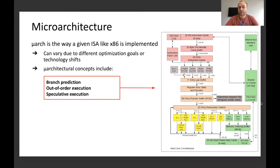Consider an instruction set like x86. Microarchitecture is basically the way a CPU implements that in hardware. One example you can see here on the right side is the Intel Core 2 architecture, and a general flow overview of the different blocks of that CPU. That implementation or microarchitecture can differ between CPUs and differ between vendors.